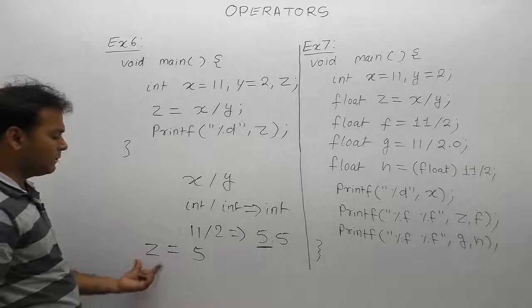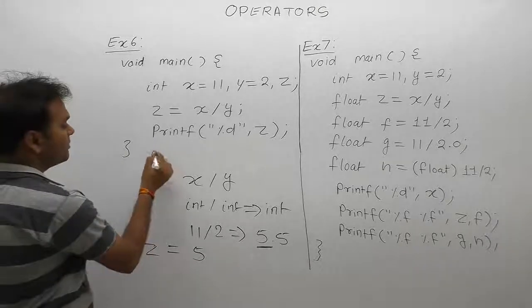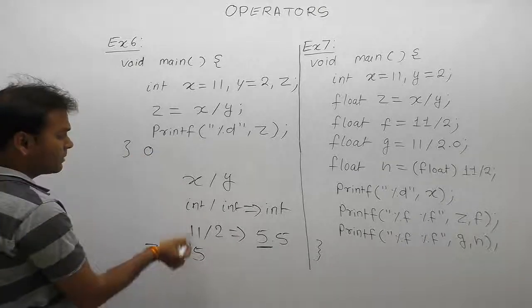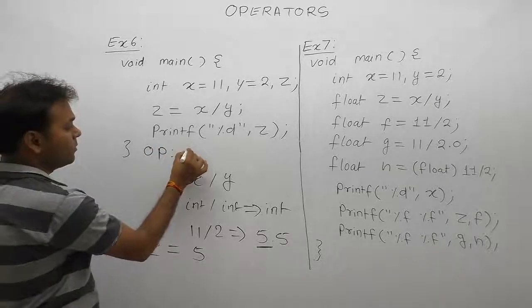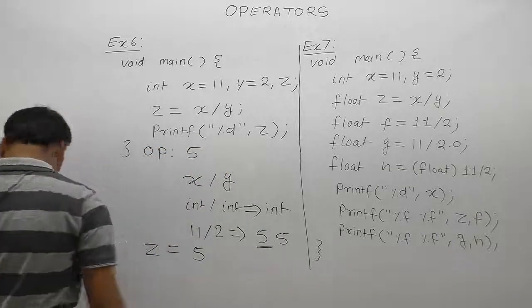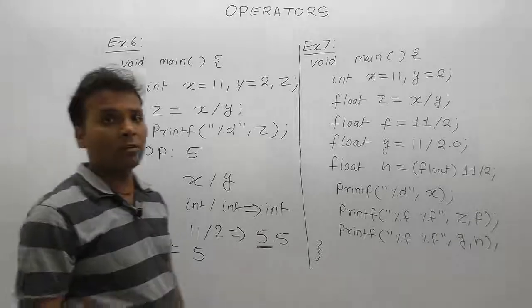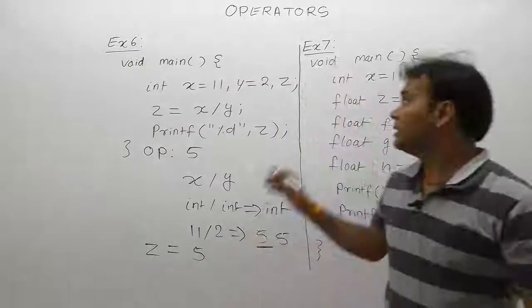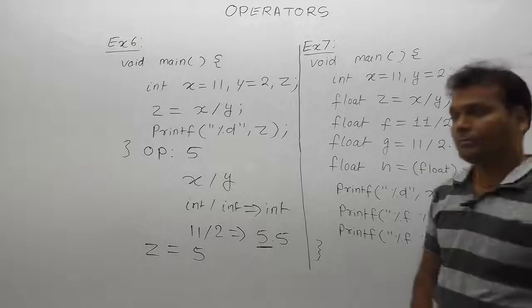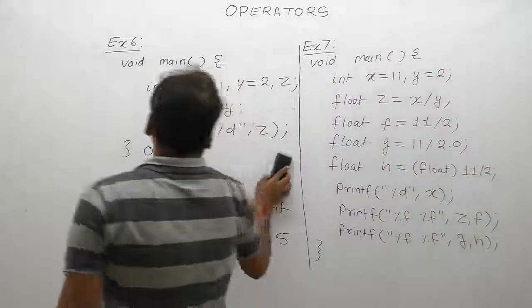The result 5 is assigned to the variable z. Z is also an integer variable, so 5 is stored in z. Now for the second example.